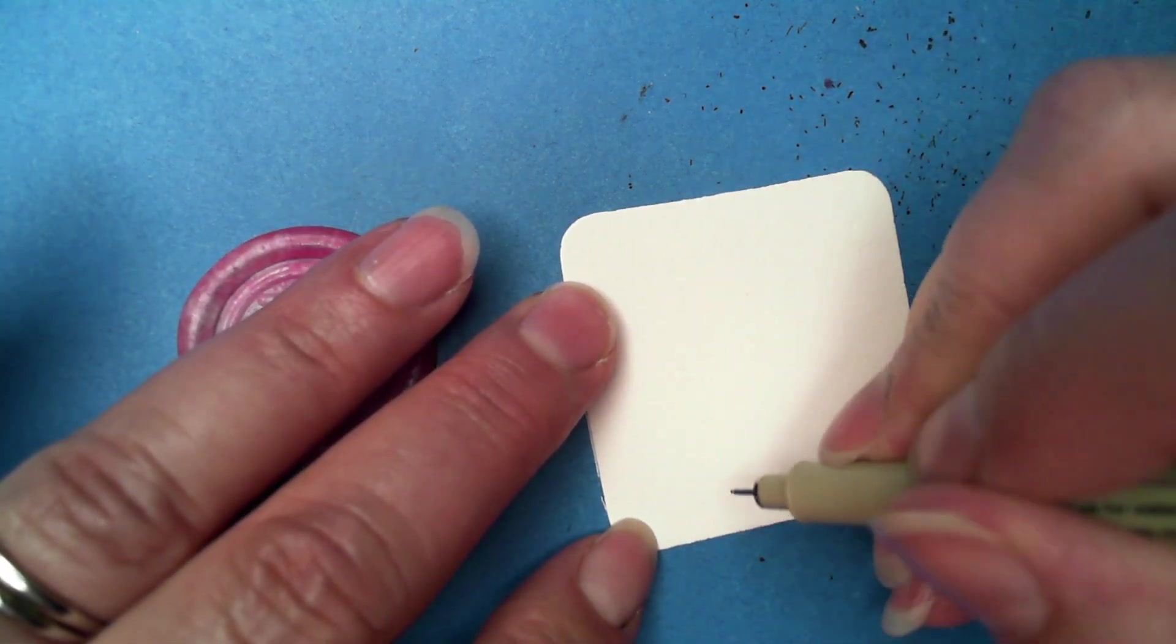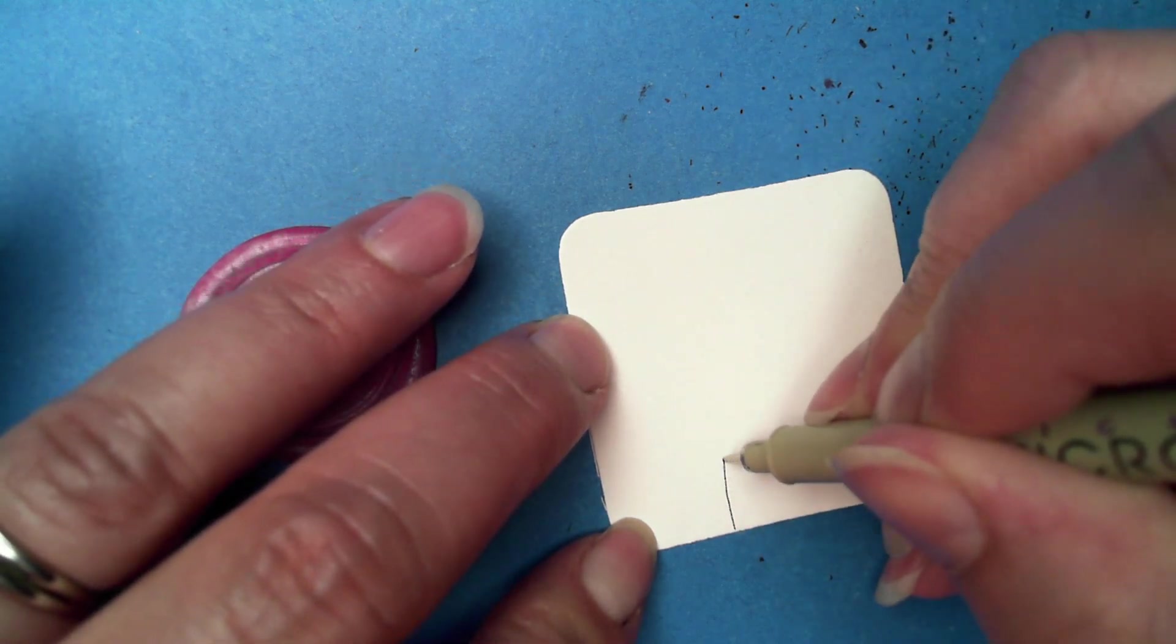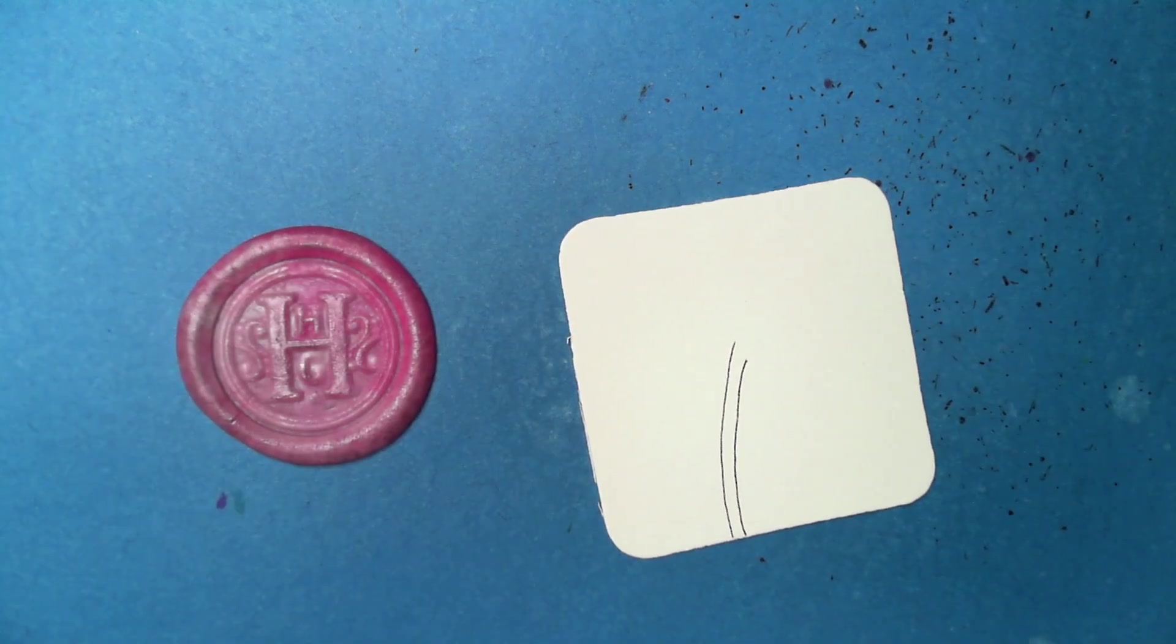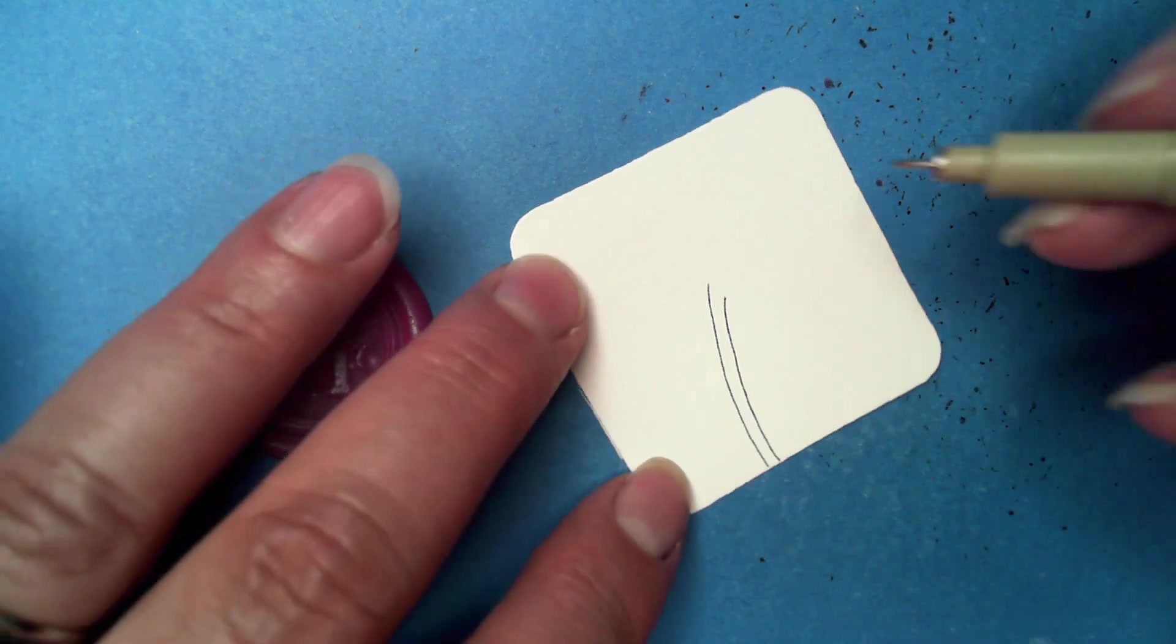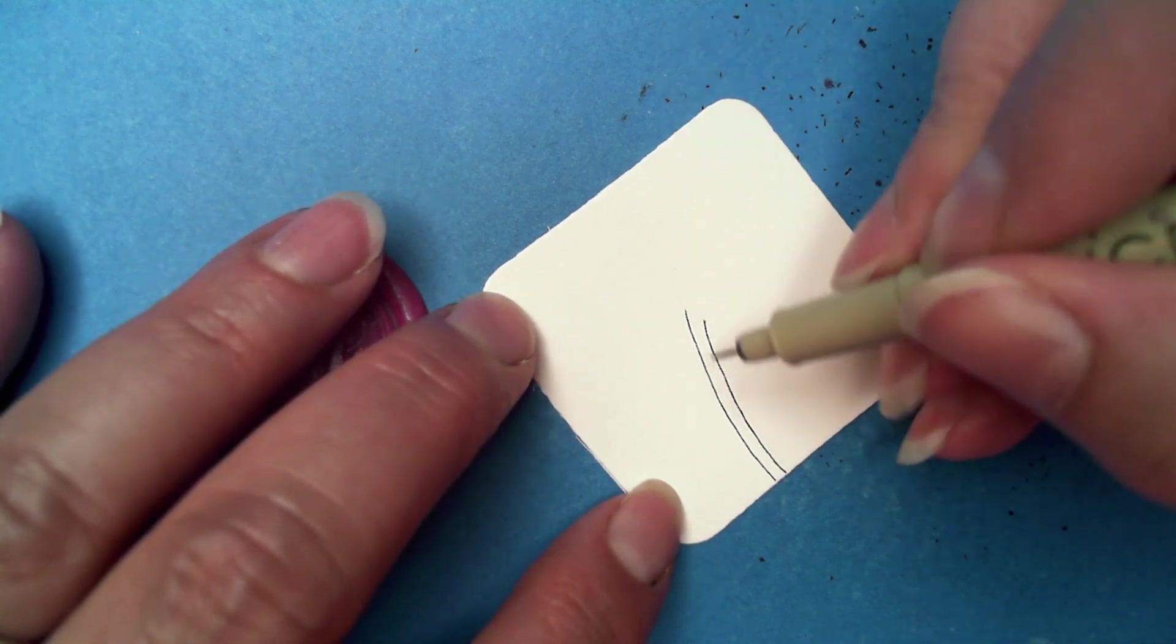This one starts off with a couple of lines that are essentially like a stem. I'm going to do it slightly curved. You can obviously do this however you wish. Take a look at the step-out for more inspiration so you can see Deb's sample.